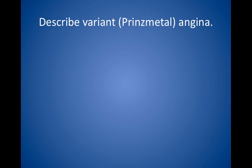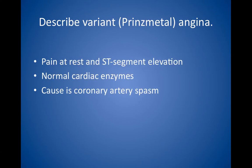Describe variant or Prinzmetal angina. This rare type of angina is characterized by pain at rest, unrelated to exertion, and ST segment elevation. Cardiac enzymes are normal. The cause is coronary artery spasm. Prinzmetal angina usually responds to nitroglycerin and is treated over the long term with calcium channel blockers, which reduce arterial spasm.